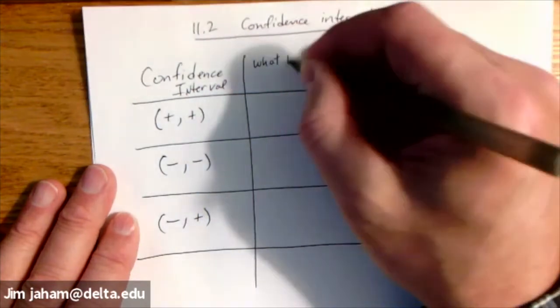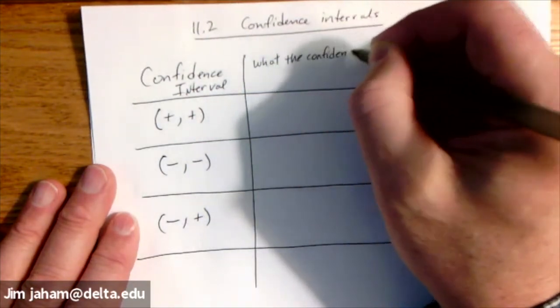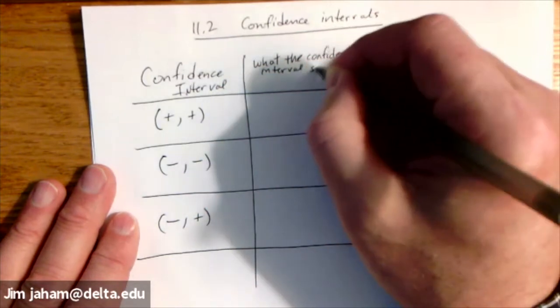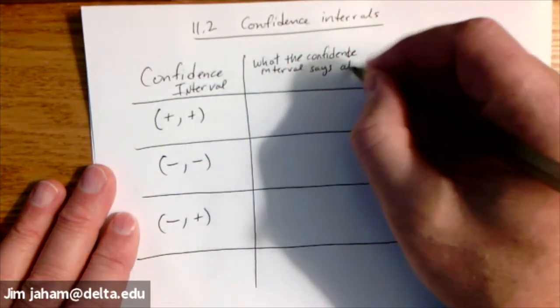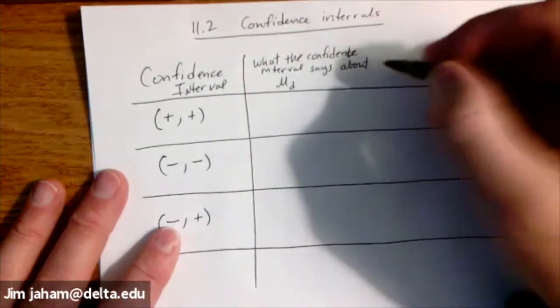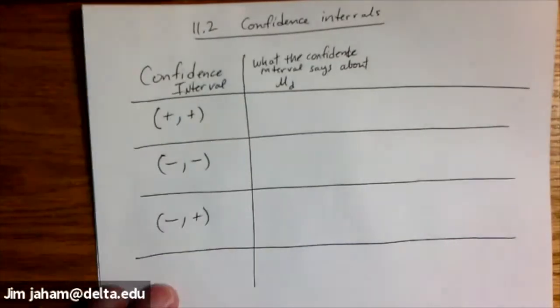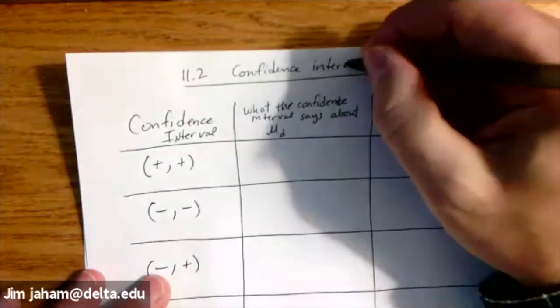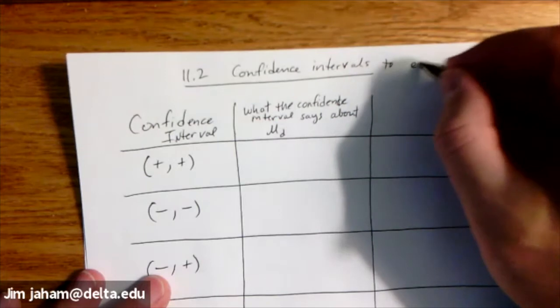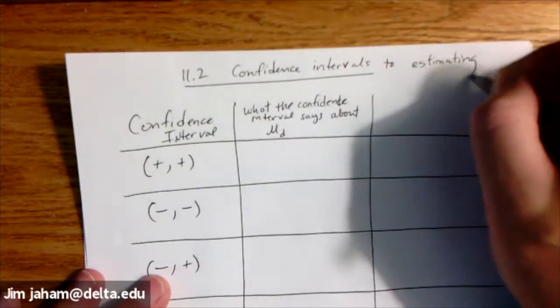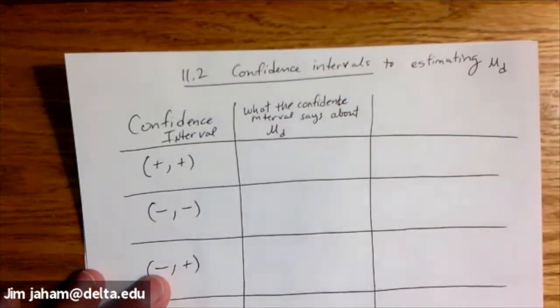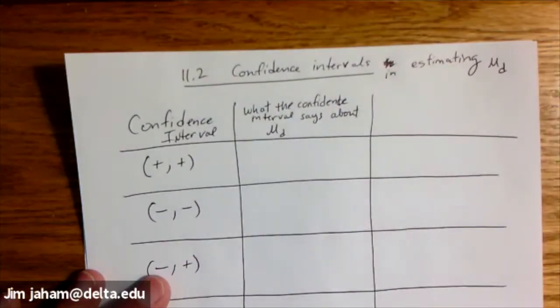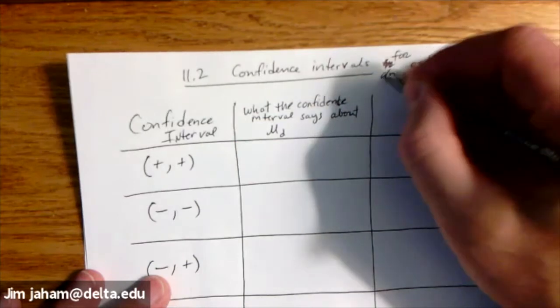And in the next column, what the confidence interval says about the mean of the differences. So when we do a confidence interval in this section, remember confidence intervals are used to estimate a population parameter. And so what we'll be estimating here is the mean of the differences. I should say for estimating mu sub d.